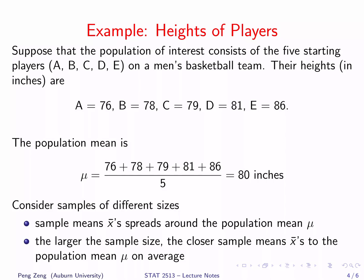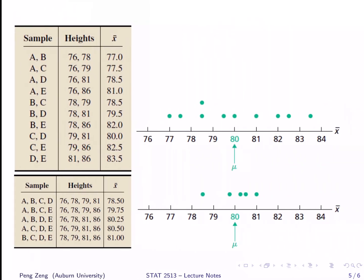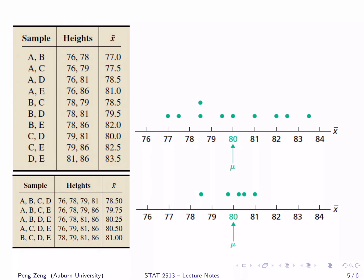Now let's consider samples of different sizes. Here, we claim two properties. Firstly, the sample mean x̄ spreads around the population mean μ. Secondly, the larger the sample size, the closer the sample mean x̄ to the population mean μ on average. Let me explain what I mean here. Consider drawing a sample of size 2. There are 10 possible such samples. In the first table, I list all the 10 possible samples. The sample mean is calculated for each sample. We can see that the sample means range from 77 inches to 83.5 inches. The dot plot shows the values of the sample means. We can see that it spread around 80 inches. Note that 80 is the population mean.